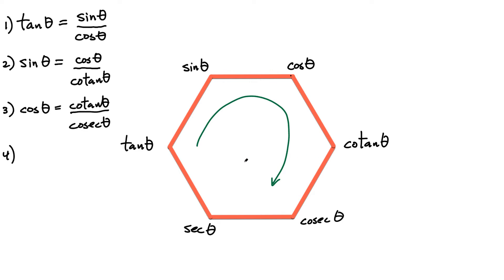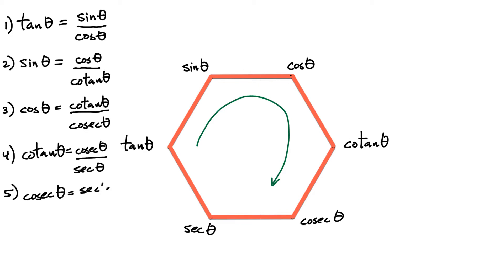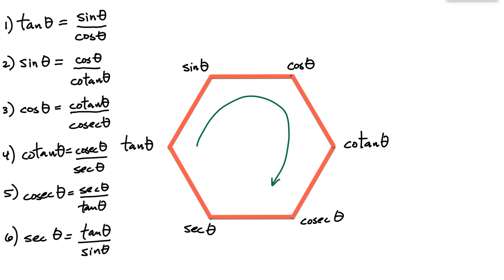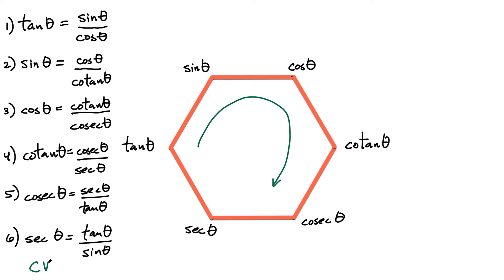Number four: starting at cotangent, cotangent equals cosecant of the angle theta divided by secant of the angle theta. Number five: starting at cosecant, cosecant must be equal to secant of the angle theta divided by tangent. And last but not least, secant of any angle theta must be equal to tangent of the angle theta divided by sine of the angle theta.